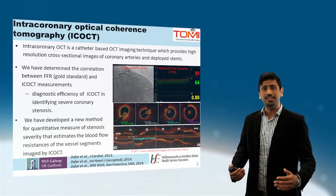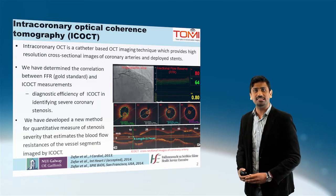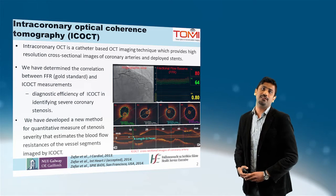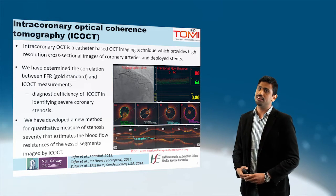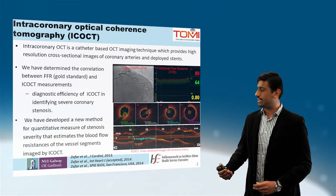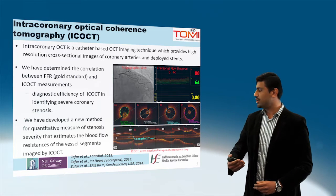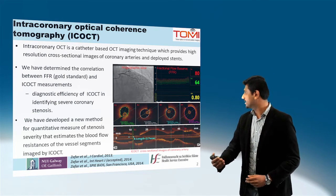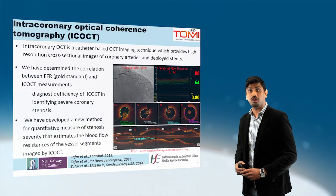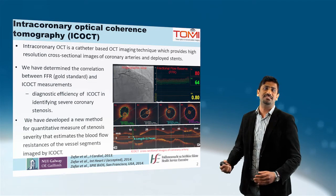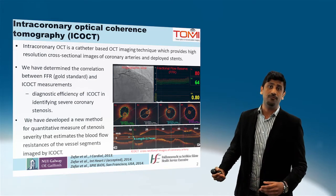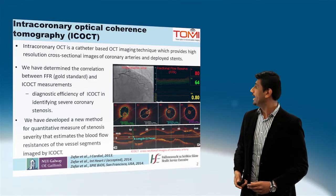We have also determined the diagnostic efficiency of intracoronary OCT in identifying severe coronary stenosis. Recently we came up with a new method for determining the severity of coronary stenosis which estimates blood flow resistances, blood velocity, and blood flow rate.